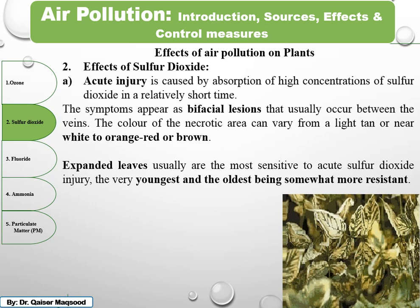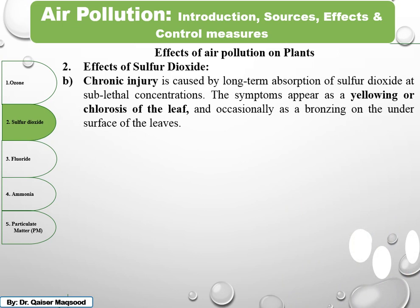The youngest leaves are small and will not receive as much exposure, which is why they are somewhat resistant. Chronic injury appears as yellowing of the leaves, and some leaves show bronzing.